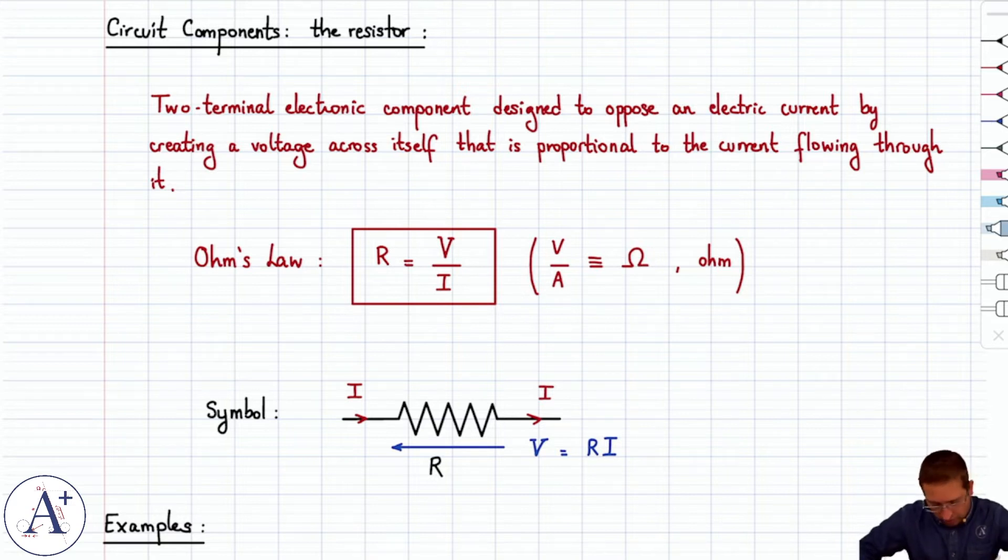Note that whatever current comes in must come out. In other words, the resistor does not dissipate any current. The amount of charge flowing in equals the amount flowing out every second. But it does oppose the current by creating a voltage.